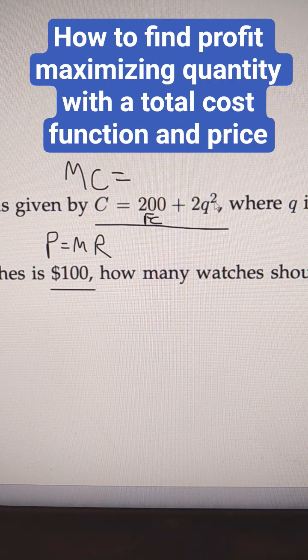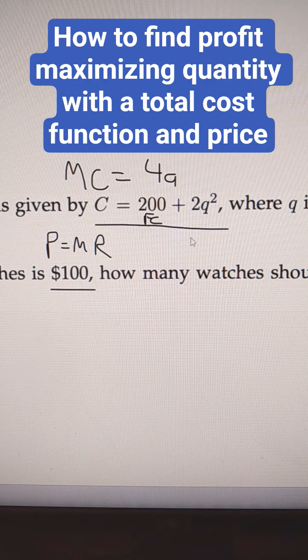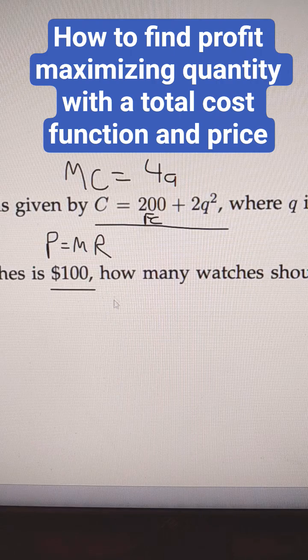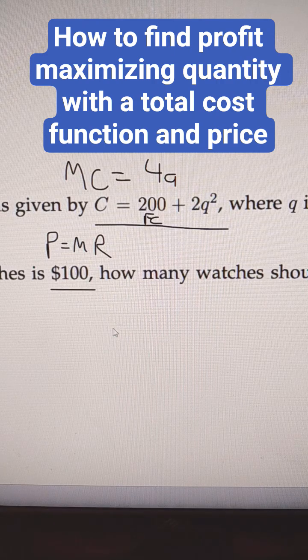And then we're going to just take that partial derivative, so this would be 4Q. So if I want to know what the profit maximizing quantity is for this firm, just set MR equal to MC.